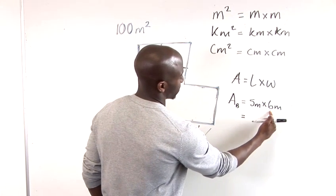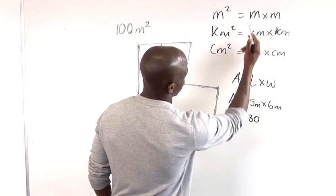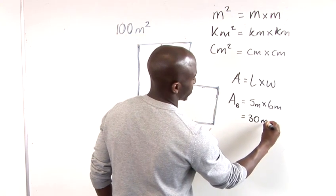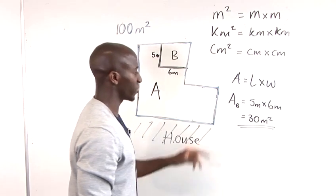So 5 times 6 is 30. So 5 times 6 is 30 and m times m up here is metres squared. So this gives us the area of B.